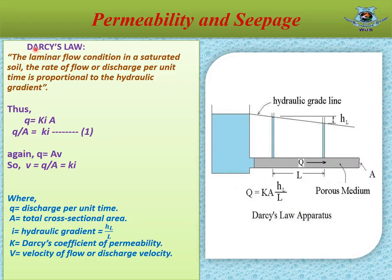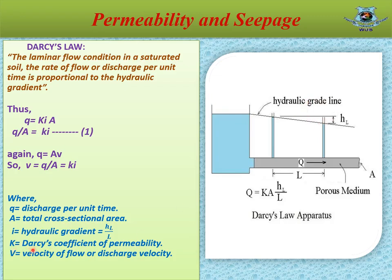Darcy's Law: The law of flow of water through soil was first studied by Darcy, who demonstrated experimentally that under laminar flow conditions in a saturated soil, the rate of flow or discharge per unit time is proportional to the hydraulic gradient. Thus, q = kiA, and q/A = ki. We also know discharge q equals cross-sectional area times velocity, so v = q/A = ki. Where q = discharge per unit time, A = total cross-sectional area, i = hydraulic gradient = Δh/L, k = Darcy's coefficient of permeability, and v = velocity of flow.